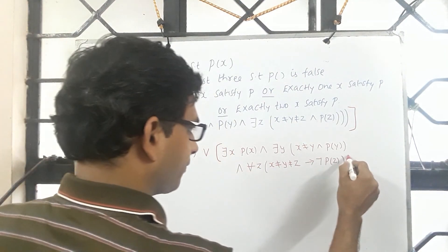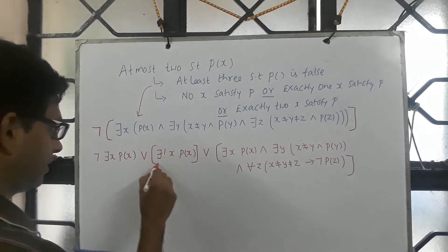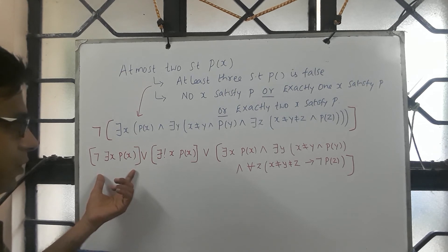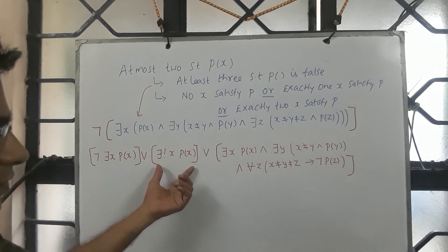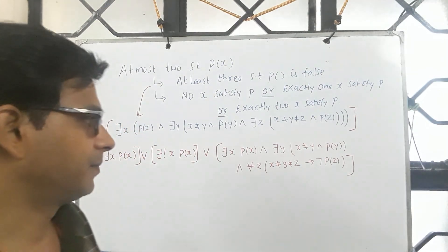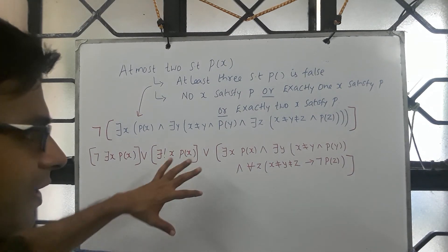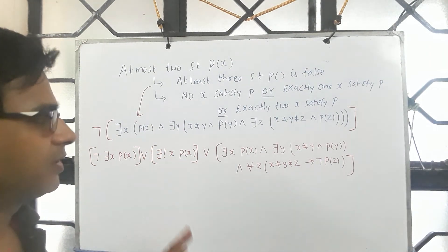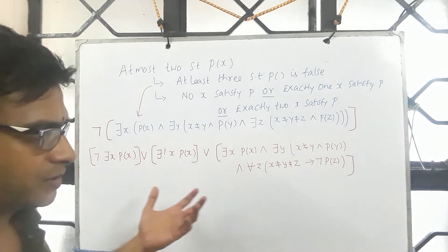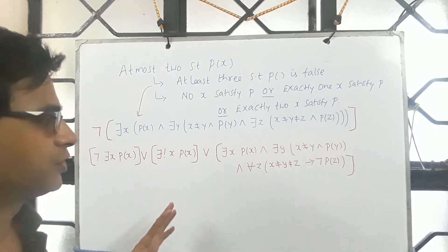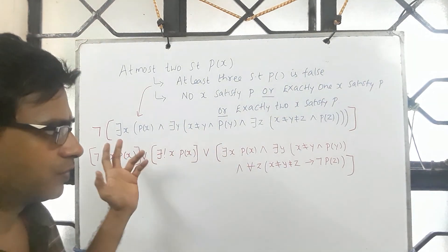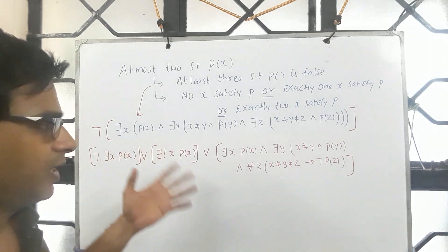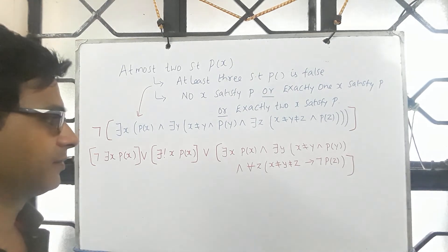So this is exactly two, this is exactly one, and exactly zero. At most two is equivalent to saying zero x satisfying p, exactly one x satisfying p, or exactly two x satisfying p. One can vary and fine-tune this expression to ask for at most ten samples being true, at least three samples being true, and so on. In general, predicate p could be anything and the universe of discourse could be anything, and one can make use of for all, there exist, and the unique quantifier to express any given logical expression.